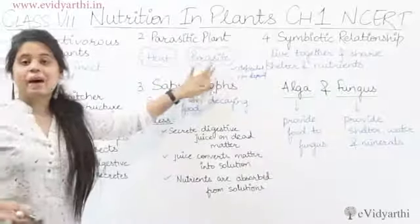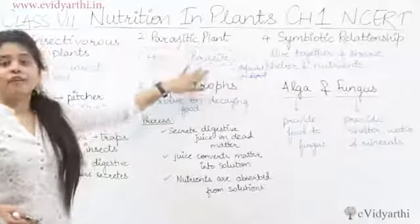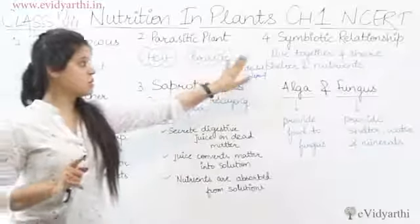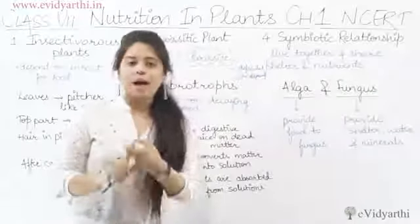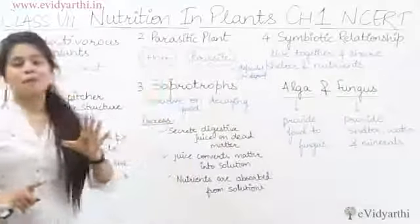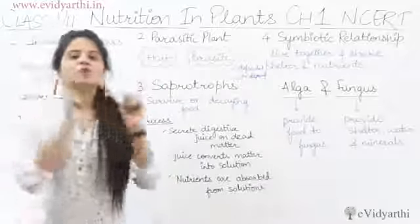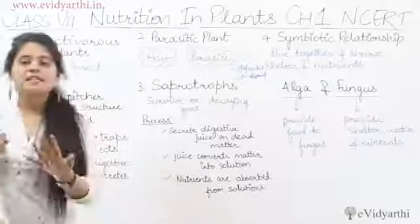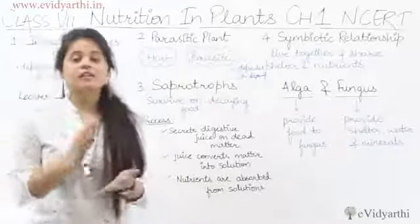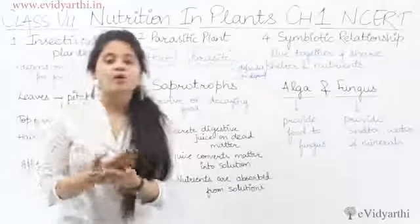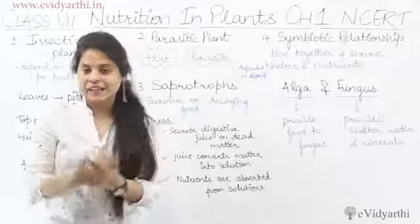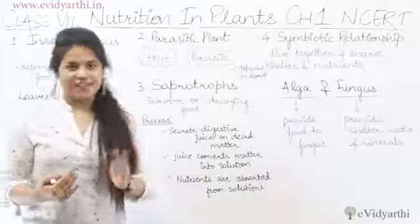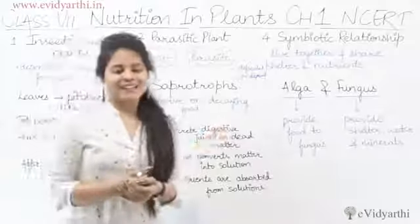In a parasitic relationship, only the parasite is dependent on the host — the host is not dependent. So in symbiotic relationship, both are dependent on each other, but in parasitic plants, only one plant is dependent. So these are the 4 other modes of nutrition for plants that cannot make their own food through chlorophyll.